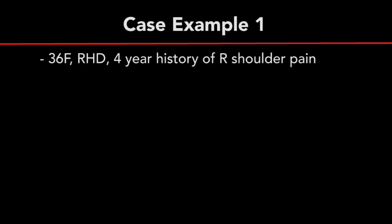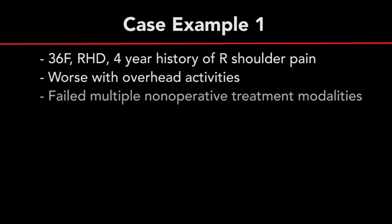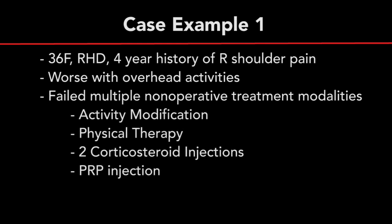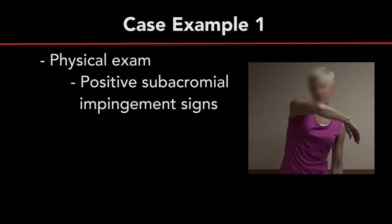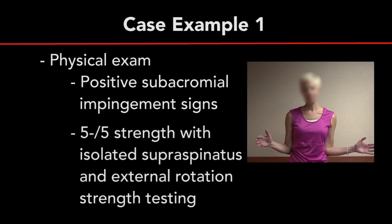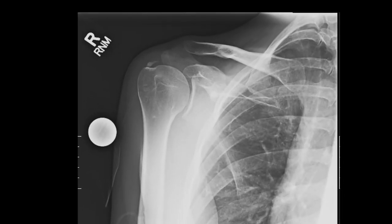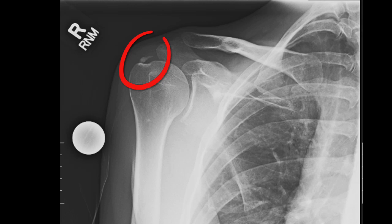Case 1 is a 36-year-old right-hand dominant healthy female, a participant in triathlons and a former javelin thrower, who presents with a four-year history of insidious onset right shoulder pain, worse with overhead activities. She has tried and failed multiple non-operative treatment modalities, including activity modification, anti-inflammatories, and corticosteroid and PRP injections. Physical examination was notable for positive subacromial impingement signs and 5 minus out of 5 strength with isolated supraspinatus and external rotation strength testing. The AP radiograph demonstrates evidence of well-defined calcium deposits just proximal to the greater tuberosity, suggestive of calcific tendinitis.